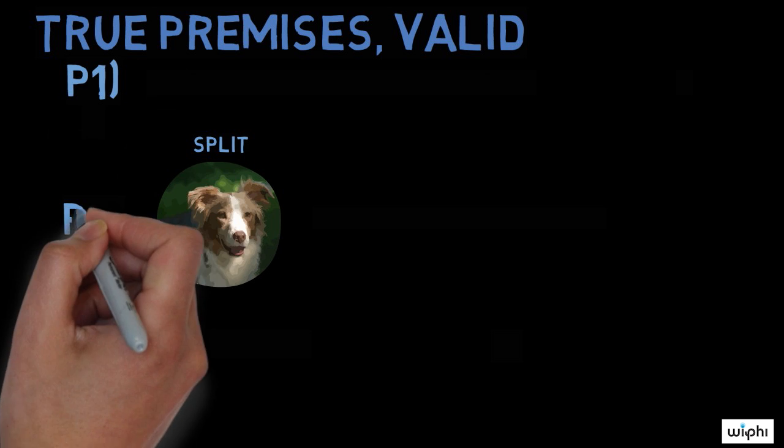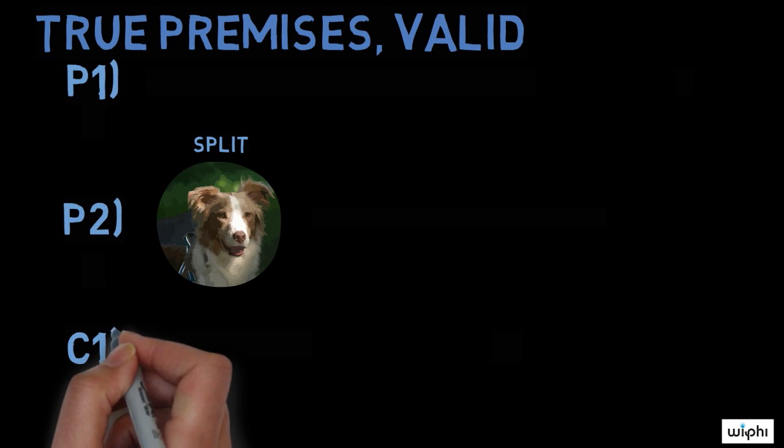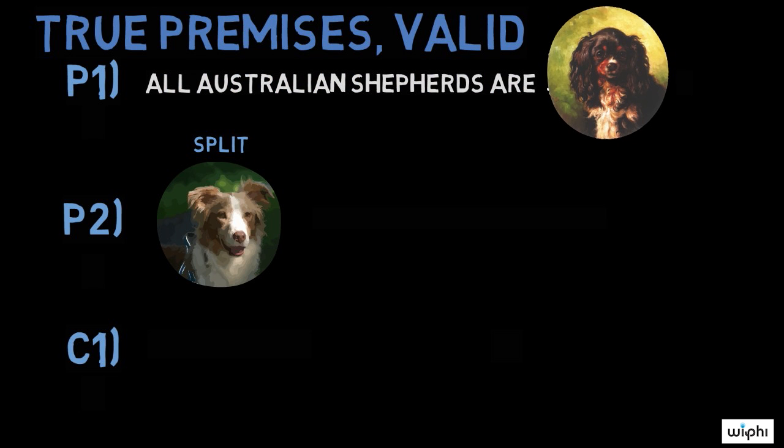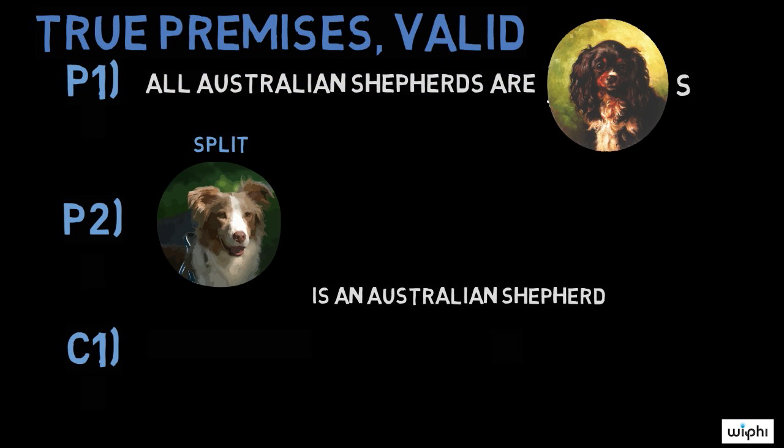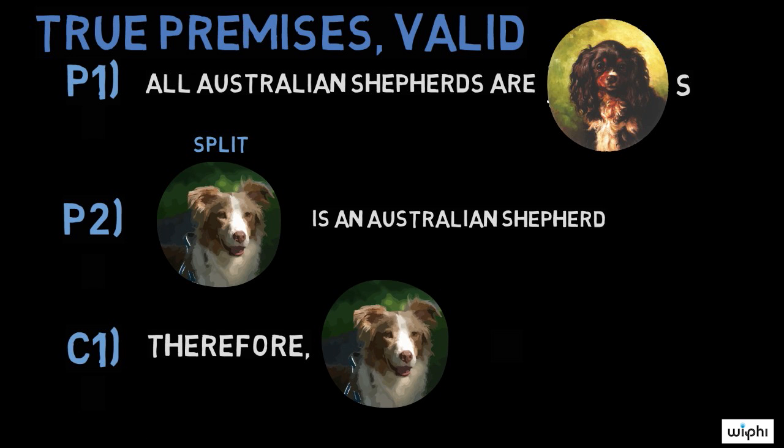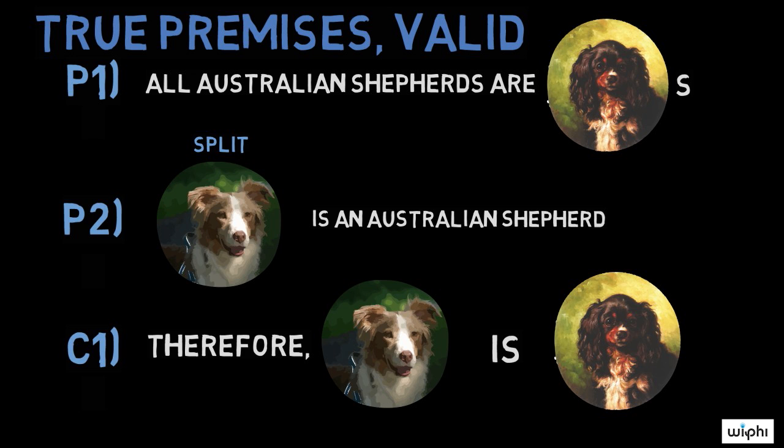This is an example of an argument that has true premises and is valid. Premise one, all Australian shepherds are dogs. Premise two, Split is an Australian shepherd. Conclusion, therefore Split is a dog.